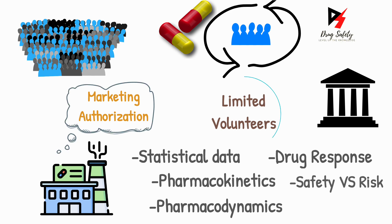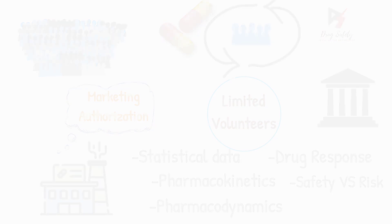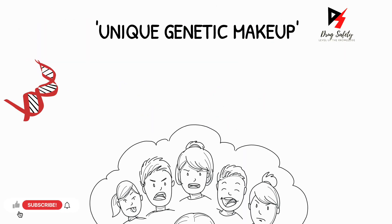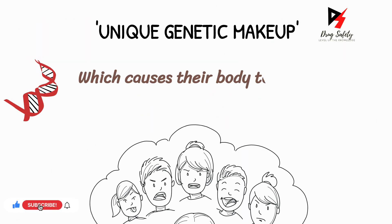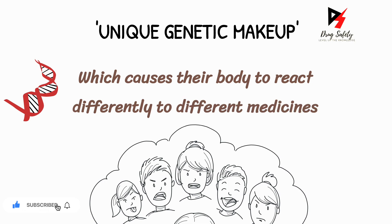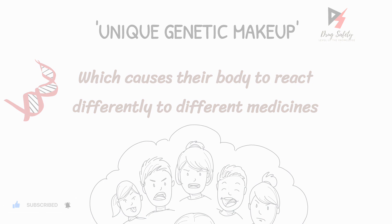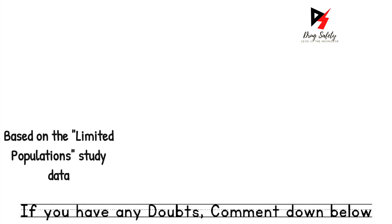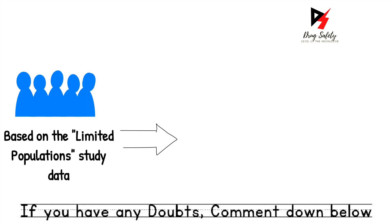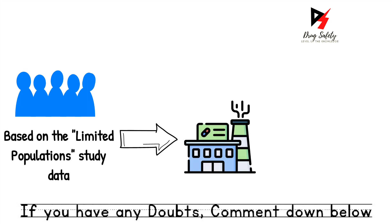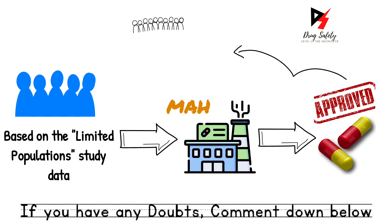This is the primary reason behind why we experience adverse drug reactions or side effects, even after a drug underwent extensive clinical trials. Apart from this, each person has a unique genetic makeup which causes their bodies to react differently to different medicines. We can conclude that based on limited population study data, the pharmaceutical company receives marketing authorization for the new drug, which allows the drug to be administered to a larger population.